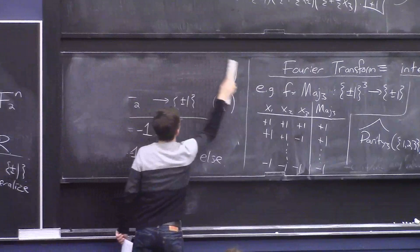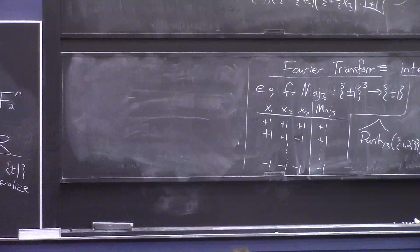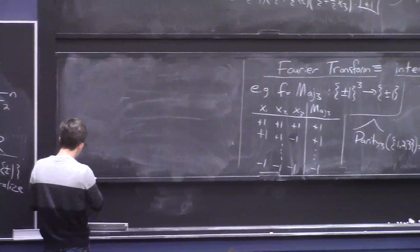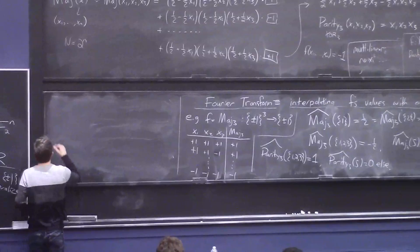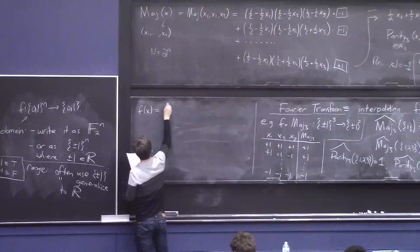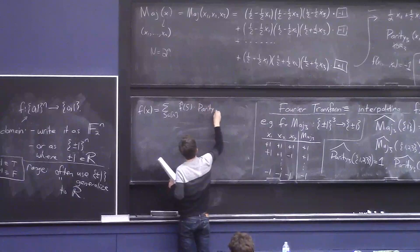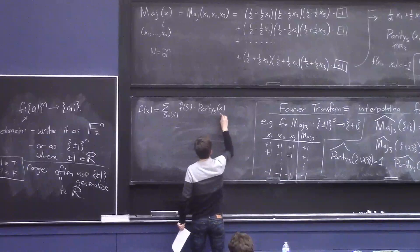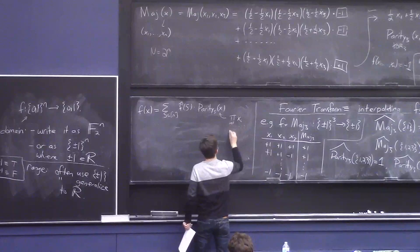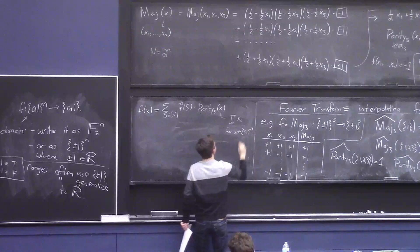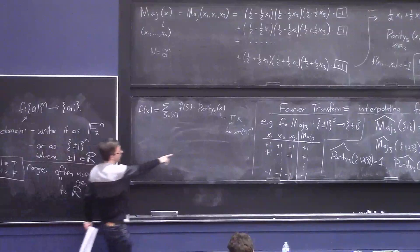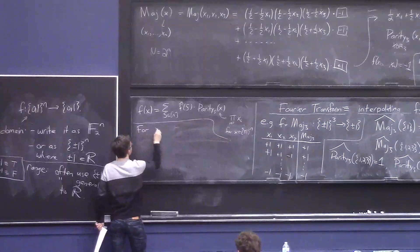On the subject of how to compute these coefficients, I want to switch notation a little bit and go back to this notation. This is the Fourier expansion of a function f of x, which equals the sum over s subset of n of f-hat s times parity sub s of x, where the parity is the product of x_i for i in s, when x is in {+1, -1}^n. Now I want to think of x as being a vector of 0's and 1's mod 2.